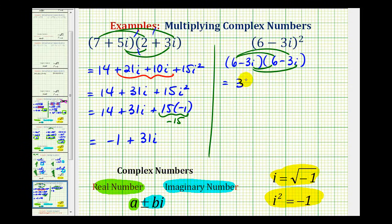So six times six is thirty-six, six times negative three i is going to be negative eighteen i. And negative three i times six is also negative eighteen i. Then we have negative three i times negative three i, that's going to be positive nine i squared.